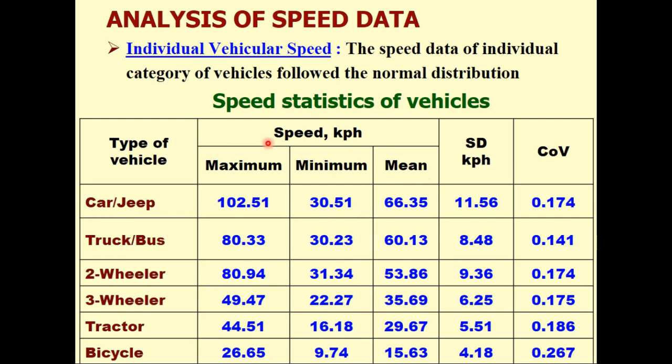This table shows you the speed statistics of vehicles. Car and jeep were grouped together. These vehicles had maximum speed of 102 km per hour with minimum of 30.5 km per hour, mean of 66.35, standard deviation 11.56 km per hour and coefficient of variation 0.174. Similarly truck and buses have speed variation of 30 to 80 km per hour, 2 wheelers 31 to 80, 3 wheelers 22 to 49.47, tractor 16 to 45 and bicycle 9 to 26 km per hour.